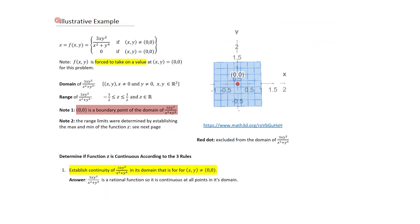Let's consider an illustrative example. We're given the function f(x,y) which takes on a functional relationship for conditions where (x, y) is not equal to (0, 0), and at the point (0, 0) it takes on the value of zero. Note that when x equals 0 and y equals 0, the denominator is zero — hence the point (0, 0) is considered a boundary point.